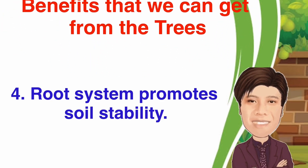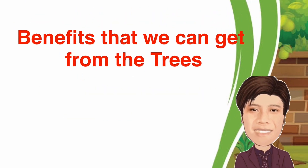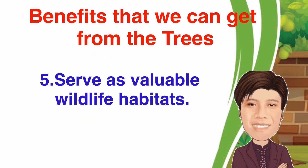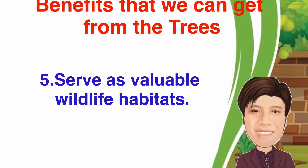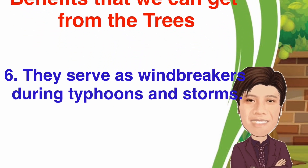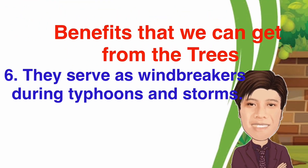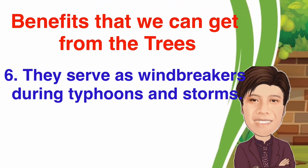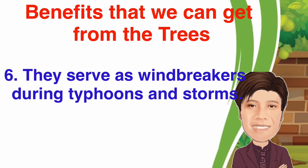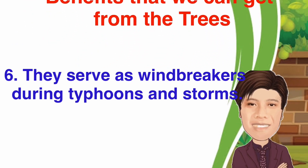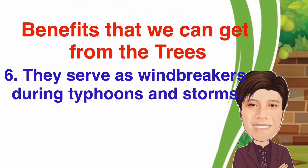4. The root system promotes soil stability. This means that the soil held by the roots remains there and does not erode. 5. They serve as valuable wildlife habitat. Wild animals live in places where there are many trees, like that of a forest. 6. They serve as windbreakers during typhoon and storm, thus reducing the damage to homes and crops.